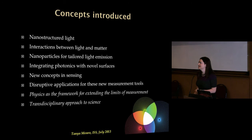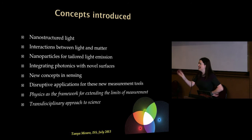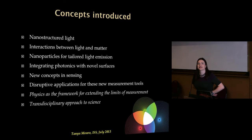Does anyone have any idea why introducing nanoscale features into light might be challenging? Quantum effects certainly come into play. And the wavelength of light — typical wavelengths are roughly 400 nanometres for blue light. So I'm talking about light that has spatial structure in it down to a few tens of nanometres. You need to play some new games to be able to do that, and this is where nanotechnology and new advances in material science come in.